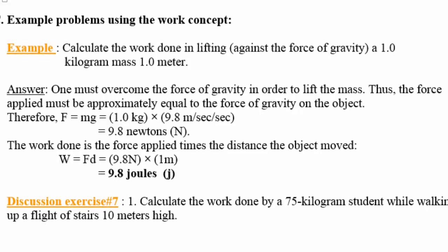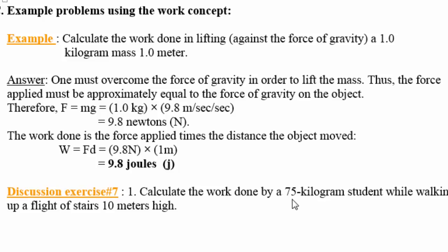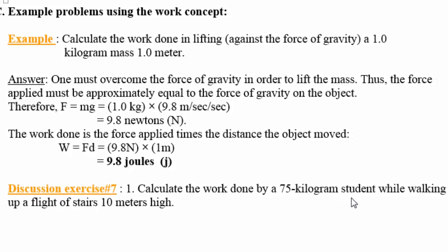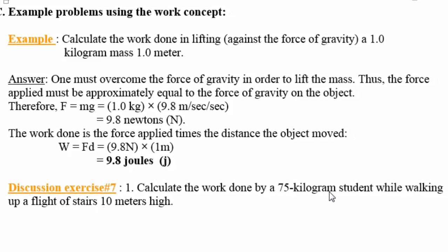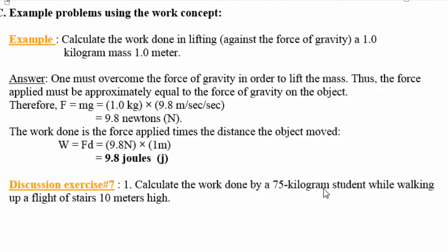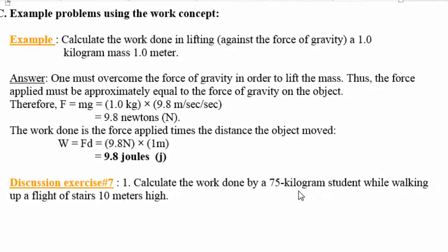Now let's look at another example. Instead of lifting an object, this student is lifting his own weight against gravity — he's doing work against gravity. In order to calculate the work done by a 75-kilogram student, you have to find his weight first, because he has to exert a force at least equal to his own weight.